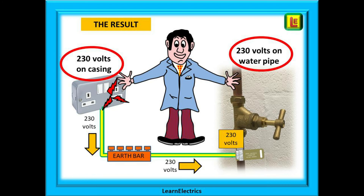We have shown this example as a supplementary bonding conductor, but it is exactly the same sequence of events if it was a main protective bonding conductor through the earth bar or the main earth terminal in the consumer unit. 230 volts travelled from the point of fault to all the connected metalwork in the property — everything rises to 230 volts — and then just as quickly the fuse blows and everything drops back down to zero volts, a condition of safety.